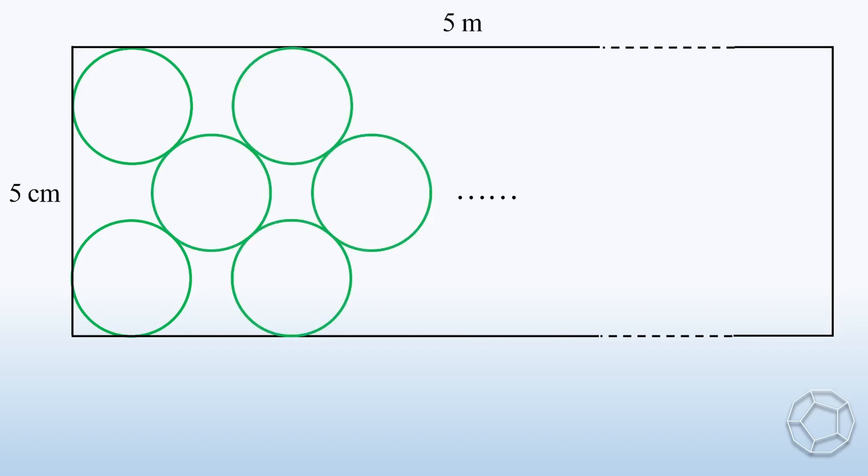Consider a long rectangle with length 5 meters and width 5 centimeters. Identical circles are put inside the rectangle touching each other. The radius of each circle is 1 cm. What is the maximum number of circles inside the rectangle?